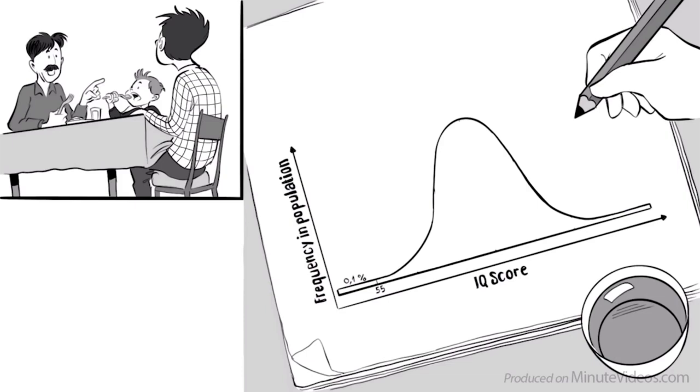0.1% of people will have an IQ of 55 or below, 2% have an IQ between 55 to 70, 14% between 70 and 85, 34% will score between 85 and the average, which is set at 100.